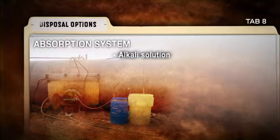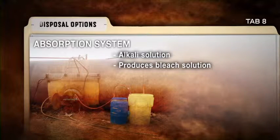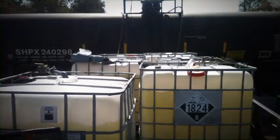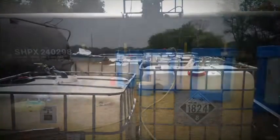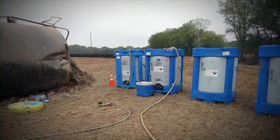Under emergency conditions, an alkali absorption system can be utilized to facilitate the removal of chlorine from a damaged vessel. The chlorine reacts with the caustic solution to produce a bleach solution that can be safely handled and removed from the site. The absorption system consists of a suitable tank capable of holding the required alkaline solution.